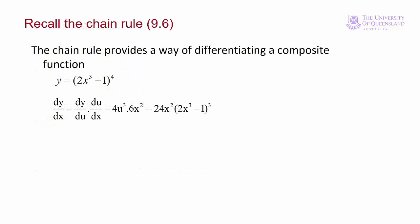If we're dealing with a function of a function, then it brings to mind the chain rule from differentiation. Recall from lecture 4 how we applied the chain rule to a composite function. For example, if we have y equals 2x cubed minus 1 to the power 4, we let the inner function 2x cubed minus 1 equal u, find dy/du as 4u cubed, multiply it by du/dx — that's 6x squared — and we end up with the result.